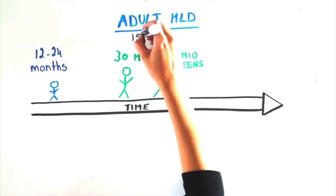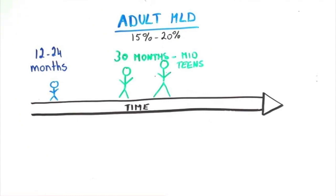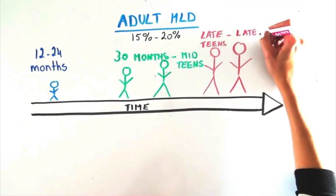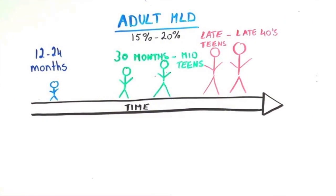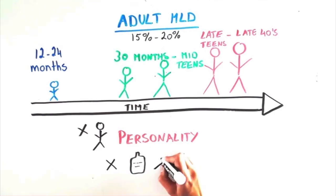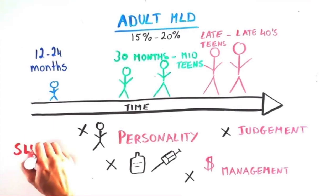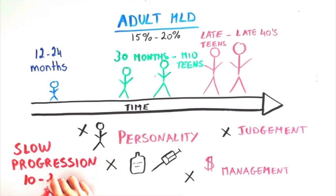Lastly, adult MLD represents 15-20% of cases and occurs at any adult age, from late teens through the late 40s and beyond. Signs of adult MLD include personality changes, alcohol or drug abuse, poor money management, forgetfulness and poor judgment, among others. These symptoms can develop slowly over 10-20 years before the disease advances severely.